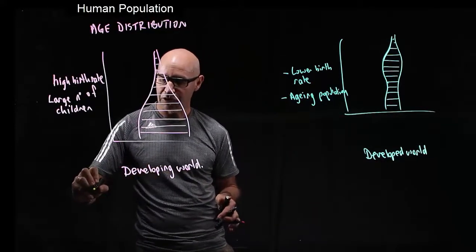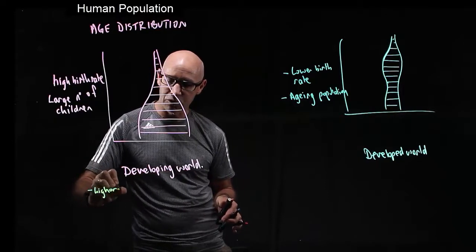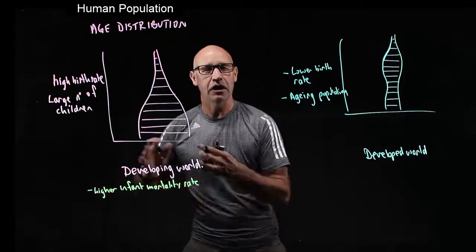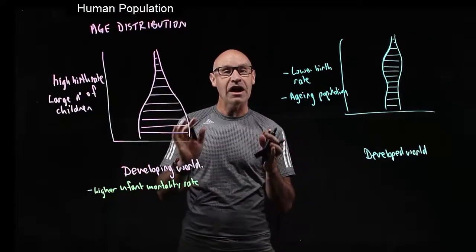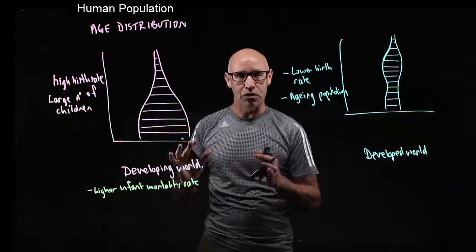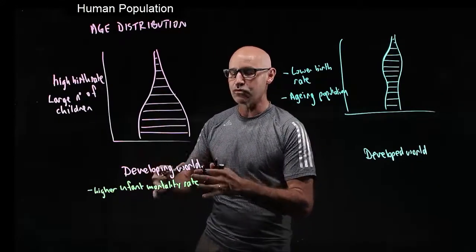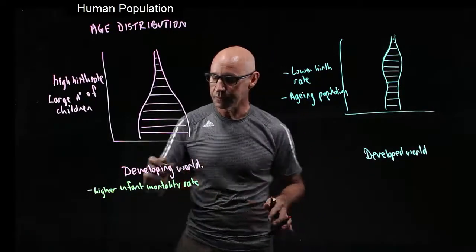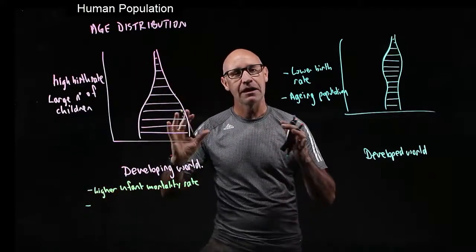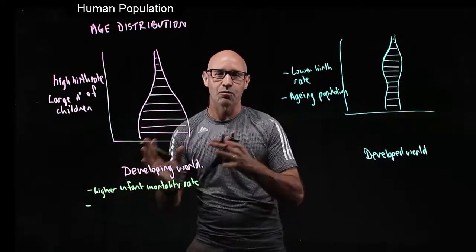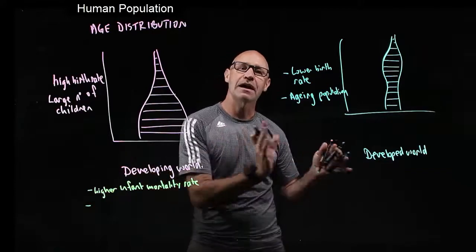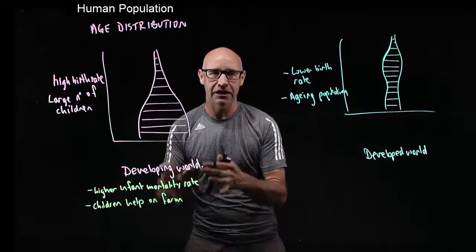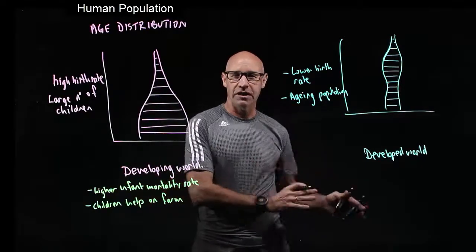Firstly, we've got a higher infant mortality. That means not every child that's born is going to move to adulthood, so families have more children to compensate for the ones that won't progress. As well as that, families have a large number of children because they can work on the farm or in the family business — they have more children so they've got extra free workers.